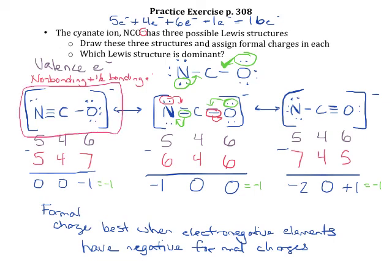To summarize: draw your Lewis structure and place all electrons as you normally would. Then determine how many valence electrons each element brought. Use all non-bonding electrons plus half of the bonding electrons to find how many electrons each atom feels like it has. Subtract to get the formal charge. The best Lewis structure has negative formal charges on the most electronegative elements. The absolute best would have no formal charges, but since this ion has a negative charge overall, some formal charges are unavoidable — so the best option is when the most electronegative element carries the negative formal charge.